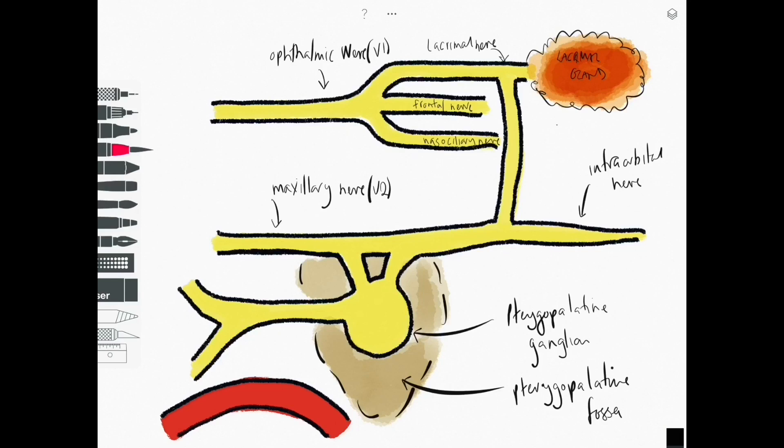There's two routes in to the ganglia. We've got one which is coming in superiorly here in this schematic which is the greater petrosal nerve and the one coming in inferiorly is the deep petrosal nerve.